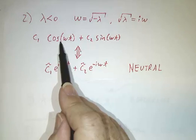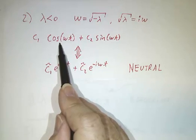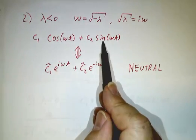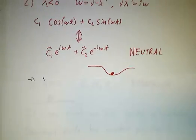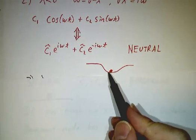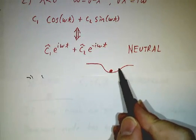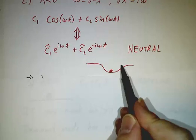This goes up and down and up and down, but it doesn't grow or shrink in the long run and neither does this. These are all neutral modes. That describes what happens if you have a ball rolling at the bottom of a hill. If you give it a little bit of kick, it goes back and forth forever.